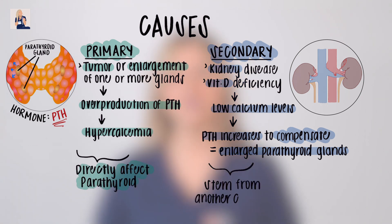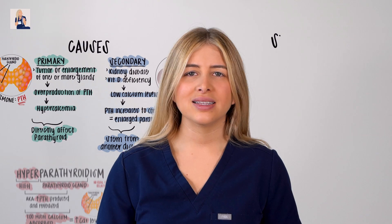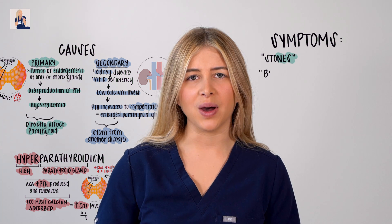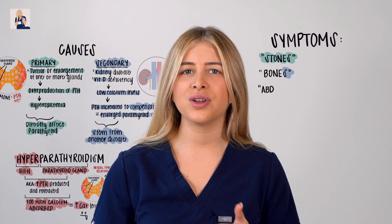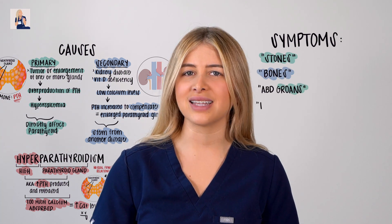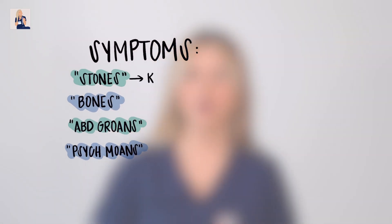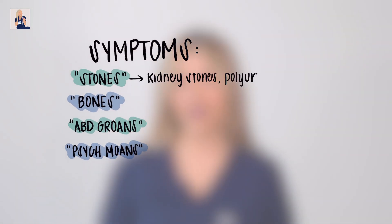For signs and symptoms, think of the saying: stones, bones, abdominal groans, and psychiatric moans. For stones, we refer to kidney stones and excess urination called polyuria. For bones, we refer to classic bone-related complications like osteoporosis, arthritis, and bone pain.